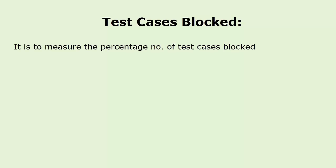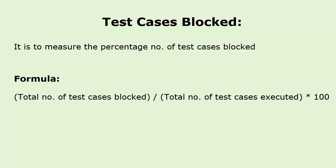Test cases blocked: it is used to measure the percentage number of test cases blocked. The formula is: test cases blocked = (total number of test cases blocked divided by total number of test cases executed) multiplied by 100. Here goes an example on test cases blocked matrix.